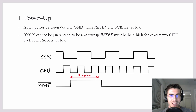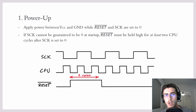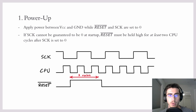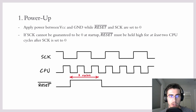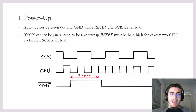The first step in the ICSP algorithm is to power the chip output while reset and source clock are set to zero. The horizontal line over reset means that the signal is active low, so it is usually high when nothing is connected to it. Since there is no way to guarantee that source clock will be low when the system is powered, reset must be held high for at least two CPU cycles of the target device after source clock is set to zero.